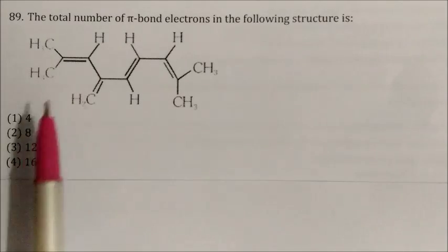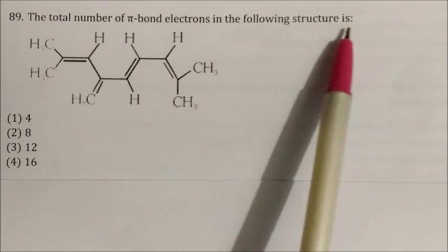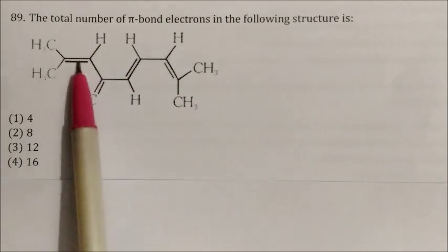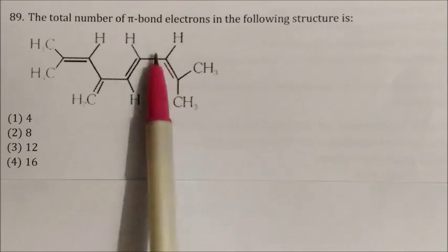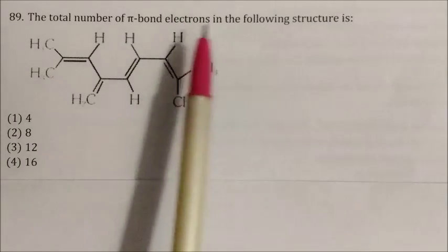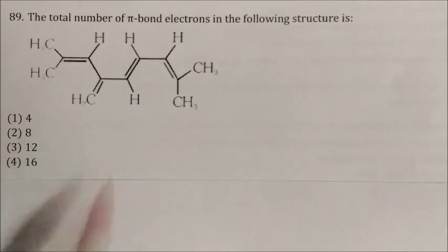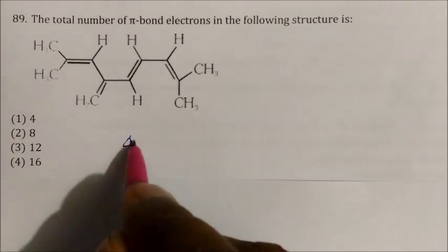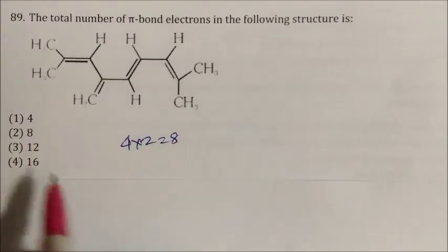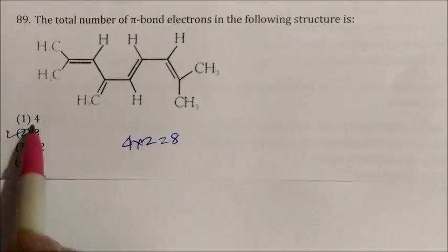Question: The total number of pi bond electrons in the given structure is? Counting the pi bonds: there are 4 pi bonds in the structure. Total pi electrons = 4 × 2 = 8 electrons. Answer: option 2, 8 pi electrons.